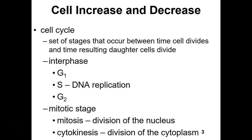Then we move into Gap 2. In Gap 2, the cell grows again, organelles replicate, and proteins for the mitotic stage are produced. In Gap 2 we have our second checkpoint, which checks the DNA to make sure it has been replicated properly with no mutations, and also checks cell size and integrity. If there's damage to the DNA or the cell, we repair it — otherwise the cell will undergo apoptosis.